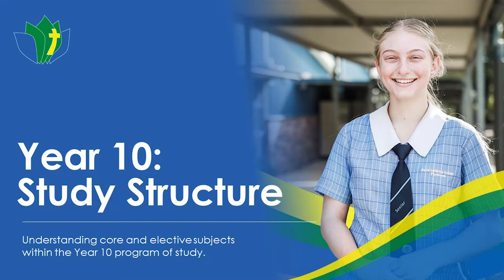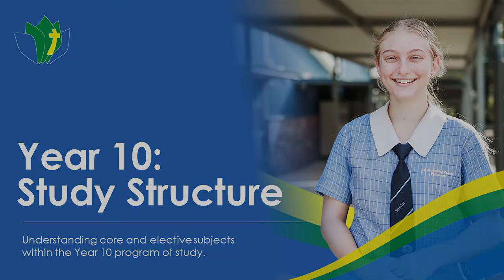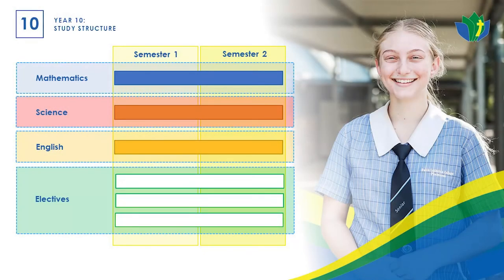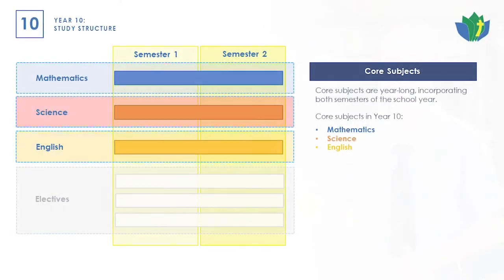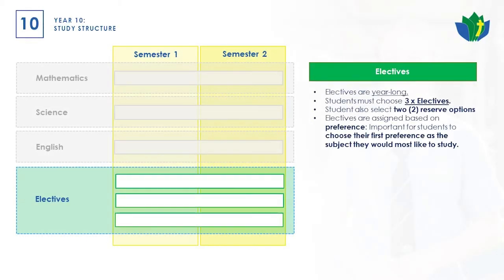The Year 10 structure is slightly different. Maths, Science and English are all year-long core subjects — that's probably the main difference between Year 9 and Year 10. Year 10 is preparing students for senior, where they'll be picking subjects for two years, so electives are also year-long in Year 10. Students will choose three electives from the available options.